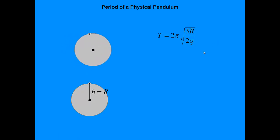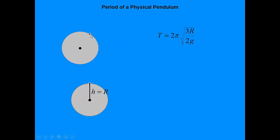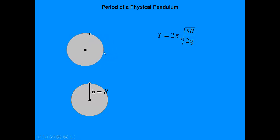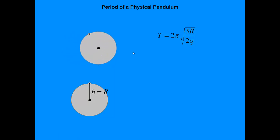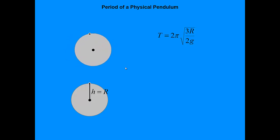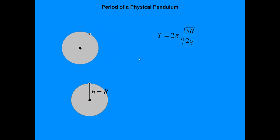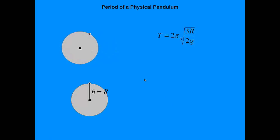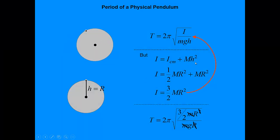This proof shows how you handle these problems. The AP has asked about different objects rotating — thin rods rotated about some point other than the center of mass, disks, spheres, even combo objects like a hoop with a rod through the middle. You just have to be careful about finding the rotational inertia correctly, but we had a lot of practice with that in the rotation unit.